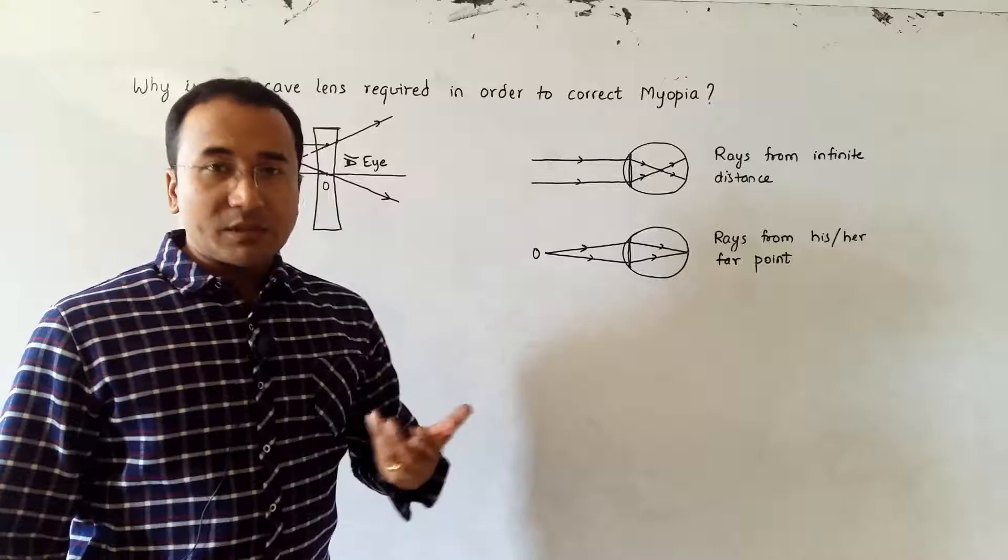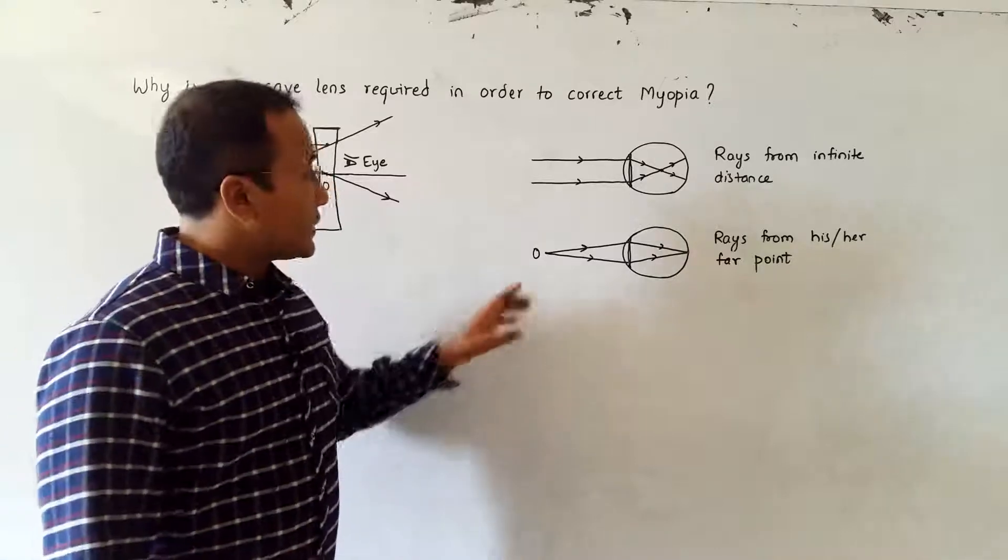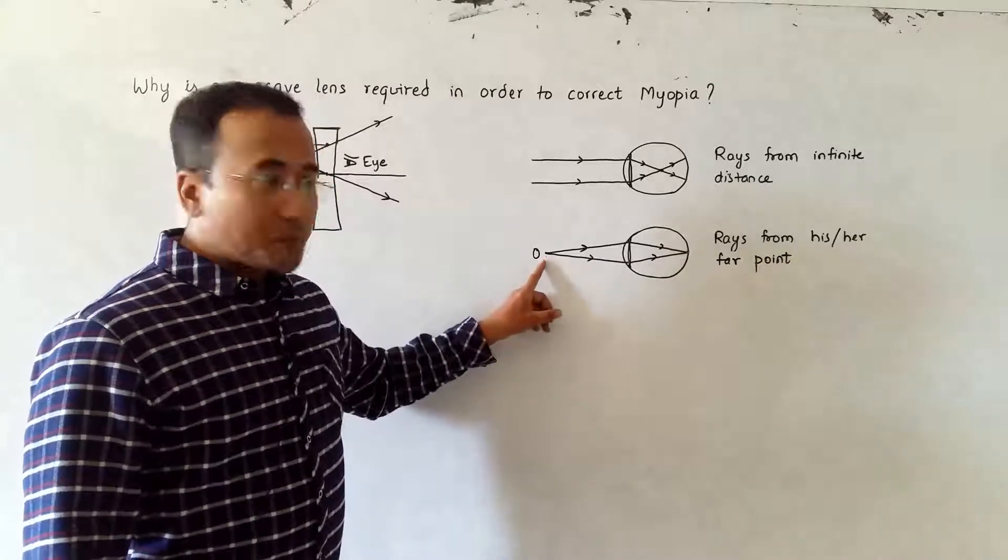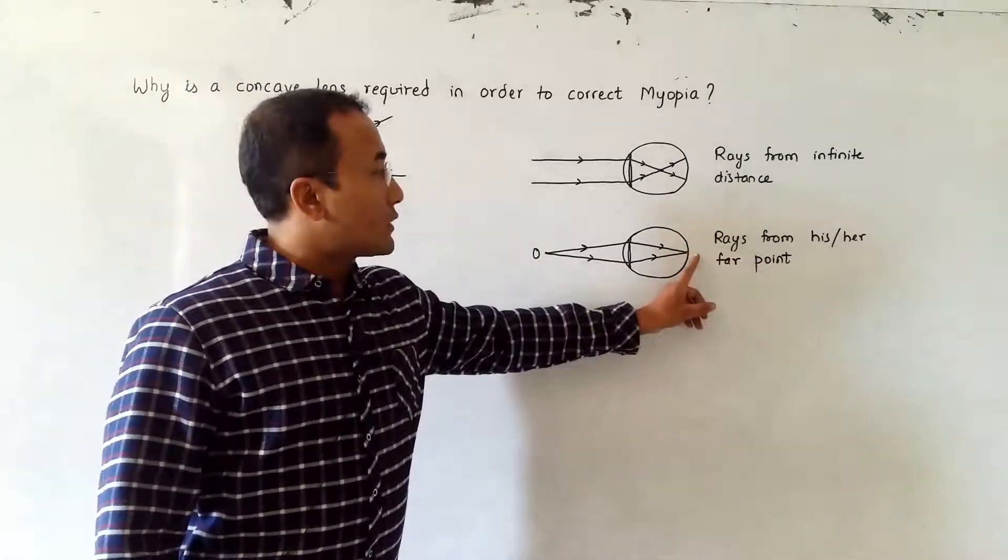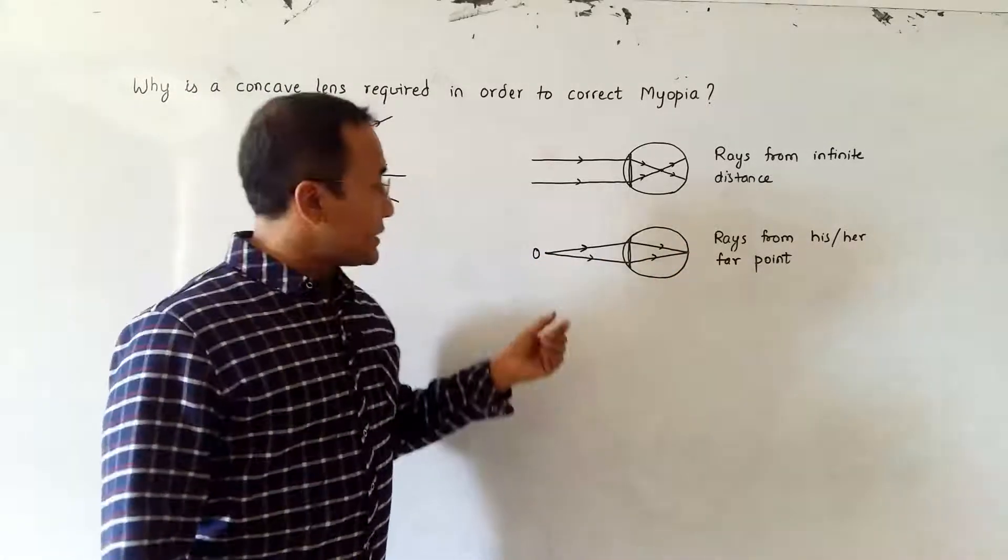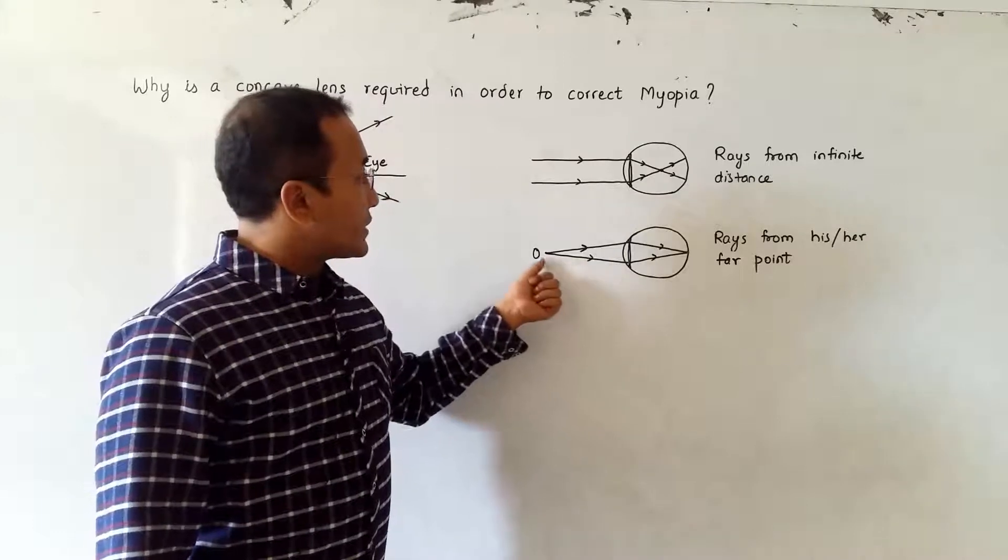But if the object is nearer, the light rays from that object will be focusing on the retina itself. So that means the eye will see such things clearer.